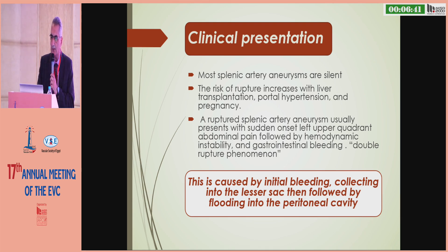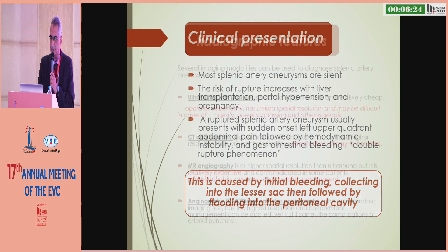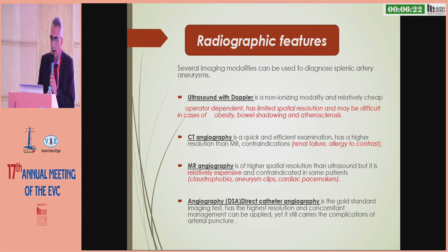Clinically, most splenic artery aneurysms are silent, while the risk of rupture increases in liver transplantation, portal hypertension, and pregnancy. Rupture usually presents with sudden onset of left upper quadrant abdominal pain followed by hemodynamic instability and gastrointestinal bleeding — the so-called double rupture phenomenon. Several imaging modalities are available: ultrasound and duplex, CT angiography, MRI, and DSA, which is the gold standard.